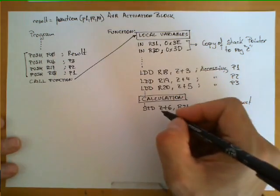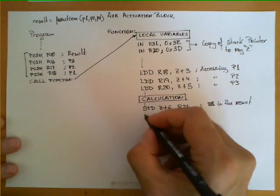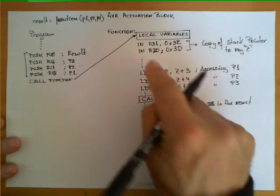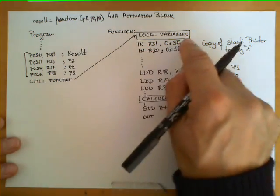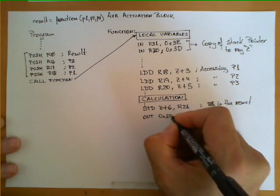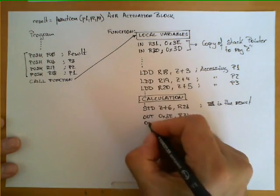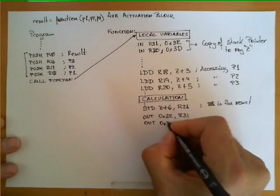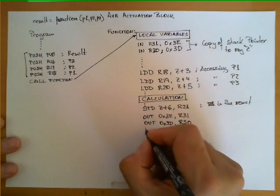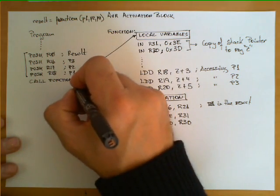Once I am done with my calculation and have placed the result in the proper location, I need to restore the initial stack pointer. I do the opposite of the IN instructions: OUT 0x3E, R31, and OUT 0x3D, R30. Finally, I return, going back to the instruction following the CALL.